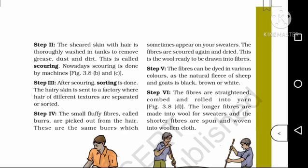The six steps in sequence are: shearing, scouring, sorting, cleaning of burrs, dyeing, and rolling. This flowchart represents the process of fiber into wool step by step.